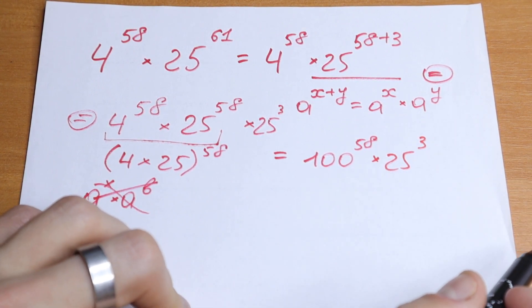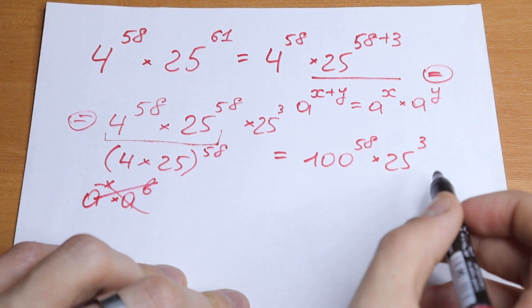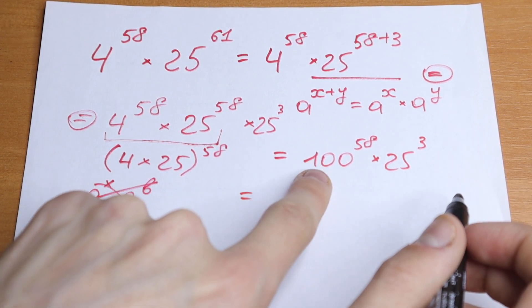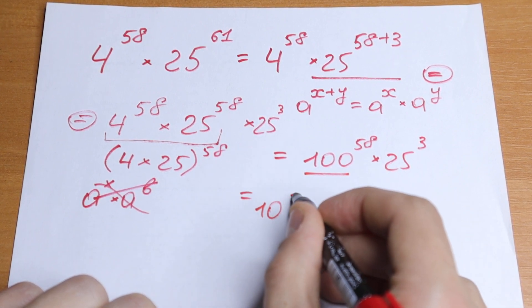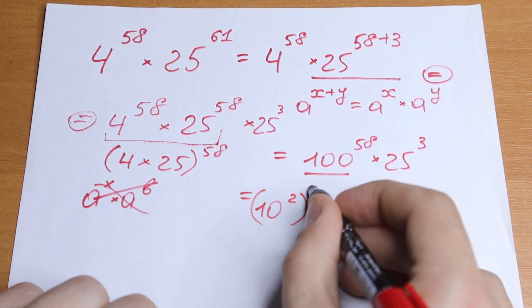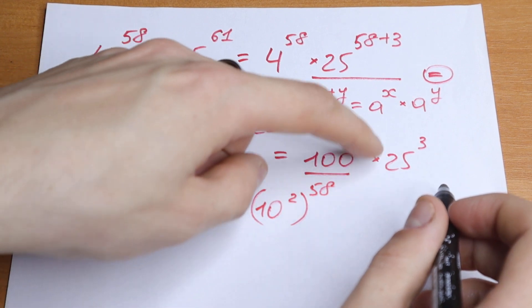So let's simplify this. Take a look at what we will have. We will have 100 to the power 58. We can write this 100 as 10 squared, raised to the power 58. This is our first element.